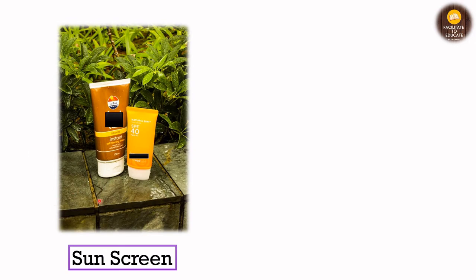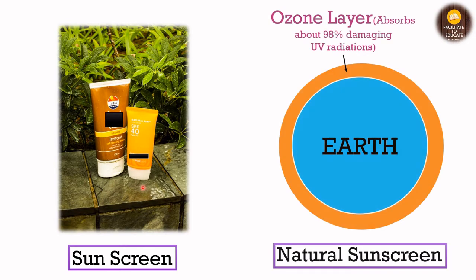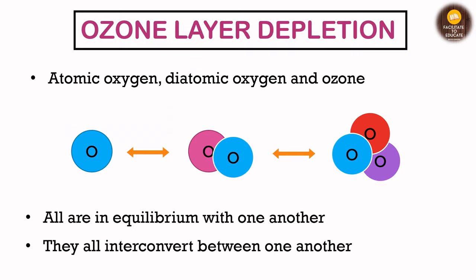Whenever we move outdoors, we apply sunscreen to protect ourselves from harmful UV radiations — in summers and even in winters. There is a natural sunscreen present in nature, which is the ozone layer. This ozone layer absorbs 98% of the damaging UV radiations that could harm us and our skin. Only for the remaining 2% do we apply sunscreen. This is why stratospheric ozone is called good ozone — it acts as a natural sunscreen for us and for other plants and animals.